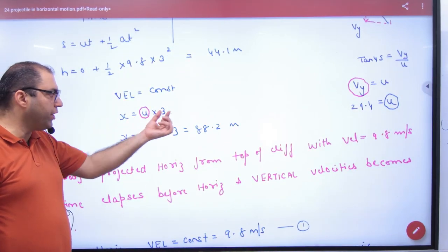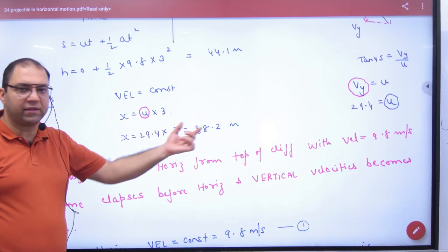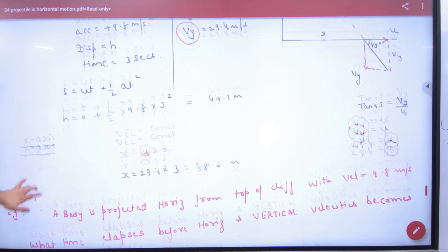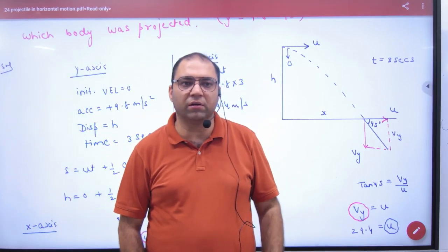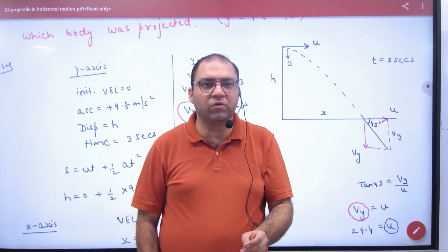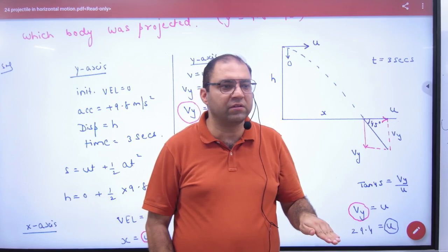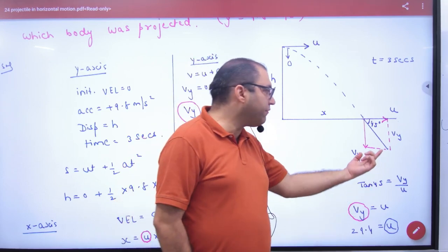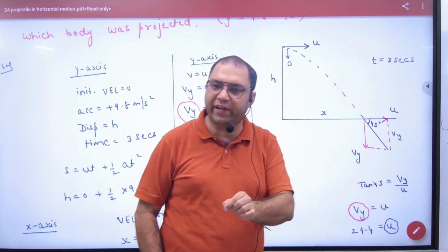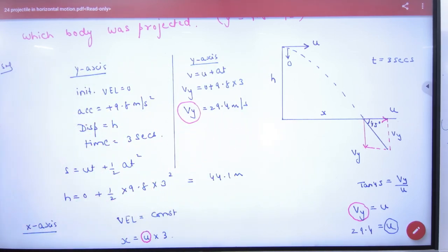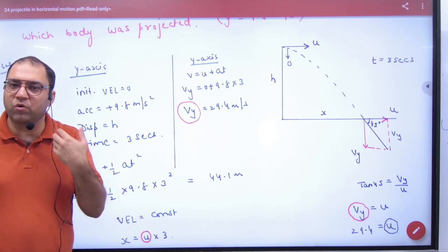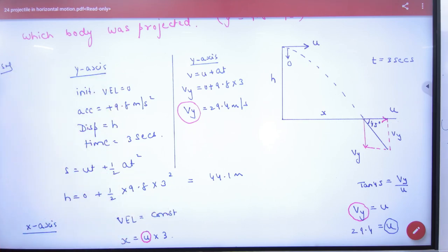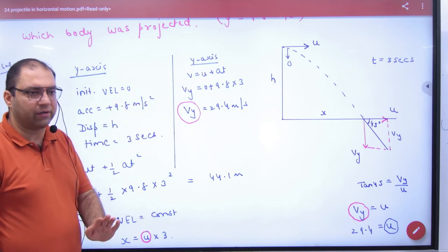In the x-axis, s = vt, so x = U × 3. In problems of this type there are only two or three equations needed: s = ut + ½at² for y-axis, s = vt for x-axis, and v = u + at when final velocity is unknown. There is no special formula to memorize — no range formula, no time-of-flight formula. It is better to solve without memorizing formulas.